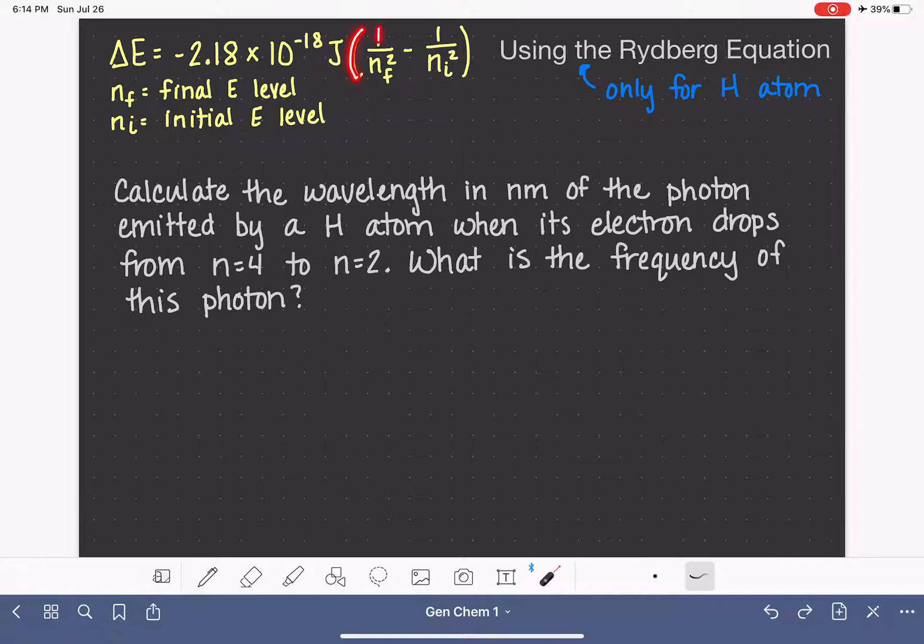And that is multiplied by 1 over the final energy level squared minus 1 over the initial energy level squared. So we're looking at the final energy level and the initial energy level.